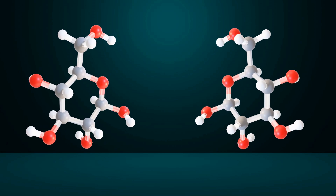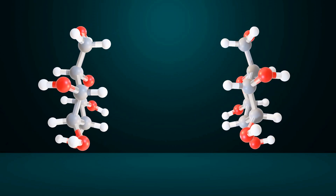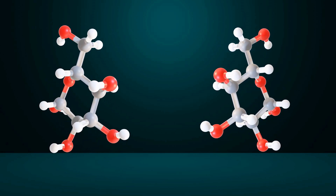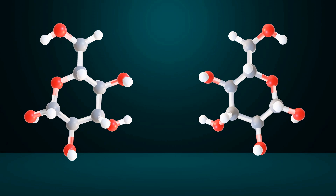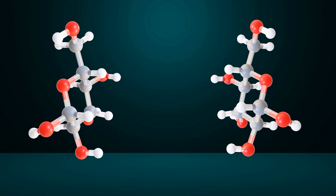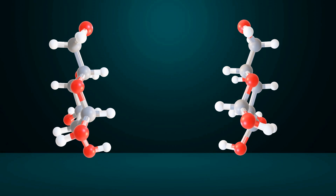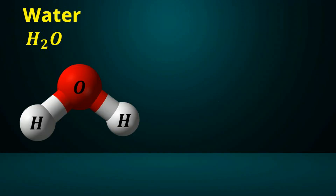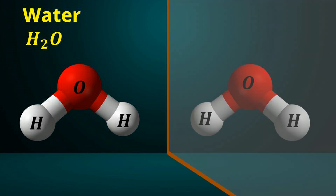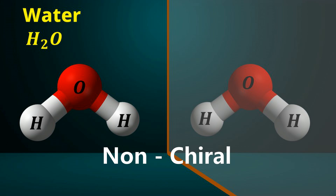Now, let us explore how molecules exhibit left-handed and right-handed properties. This topic is slightly technical and requires a basic understanding of chemistry. We know that the chemical formula of water is H2O. A water molecule consists of two hydrogen atoms bonded to a central oxygen atom at a specific angle, as shown here. If you take the mirror image of this molecule, it is identical to the original molecule and can be perfectly superimposed. This means water does not have left-handed or right-handed properties and is a non-chiral molecule.